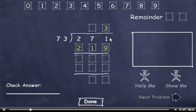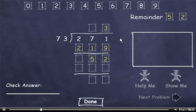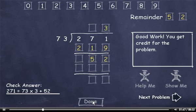11 minus 9 is 2. I borrowed from the 7, so it's now a 6. 6 minus 1 is 5. 73 can't go into 52, so 52 is my remainder. The answer is 3, remainder 52. I'll click the done button and move on to the next problem.